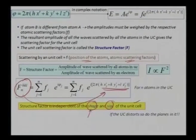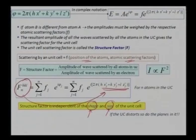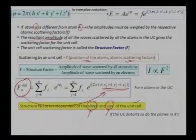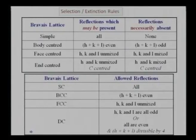The overall structure factor is independent of the shape and size of the unit cell. If I have two kinds of atoms A and B, I get a resultant amplitude arising from the scattering of different kinds of atoms. The overall scattering factor depends only on the location of atoms in a particular unit cell.